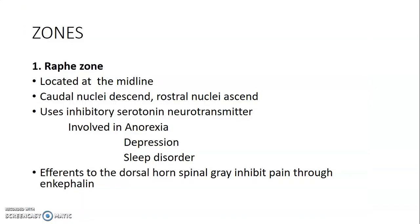There are different zones of the reticular system. The raphe zone is located at the midline; the caudal nuclei usually descend while the rostral nuclei ascend. They use serotonin as their neurotransmitter, and serotonin is inhibitory.